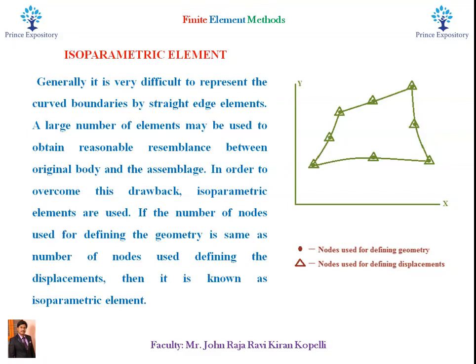In the figure shown in this slide, you can see the dots indicate nodes used for defining geometry, and the small triangle indicates nodes used for defining displacements. If the number of nodes used for defining the geometry is the same as the number of nodes used for defining the displacements, then it is known as an isoparametric element.